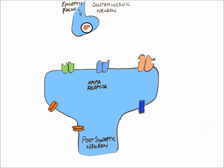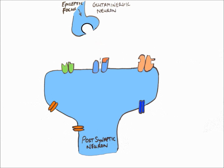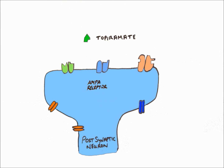Next, the AMPA receptor. When an action potential leaves the epileptic focus and reaches the glutaminergic neuron, glutamate is released. As before, lamotrigine stops glutamate release. In the absence of lamotrigine, glutamate binds to the glutamate site of the AMPA receptor, opening the channel so sodium ions enter the post-synaptic neuron, causing depolarization, excitation, and spread of the epileptic action potentials, leading to seizures.